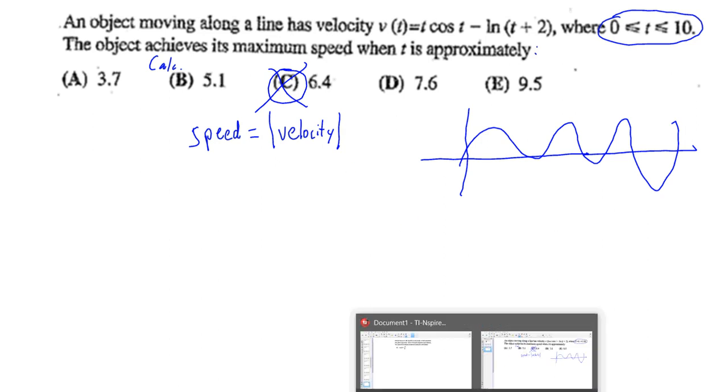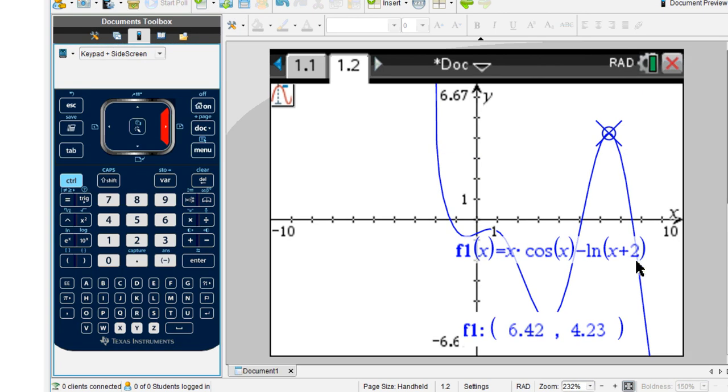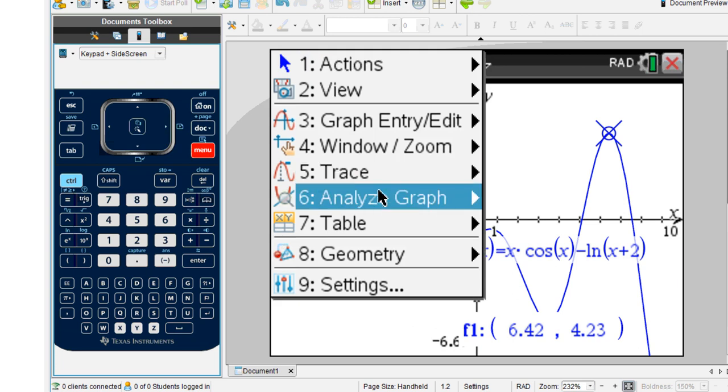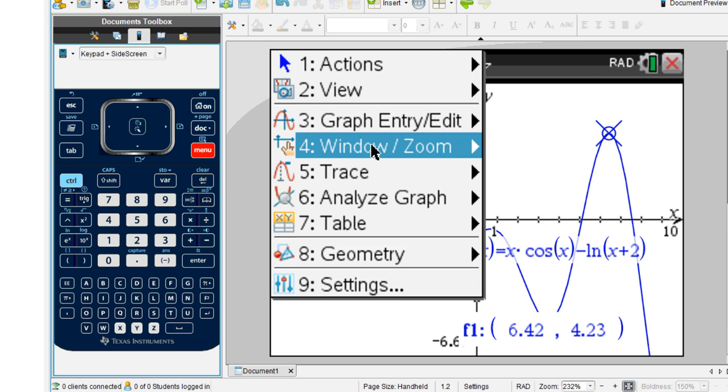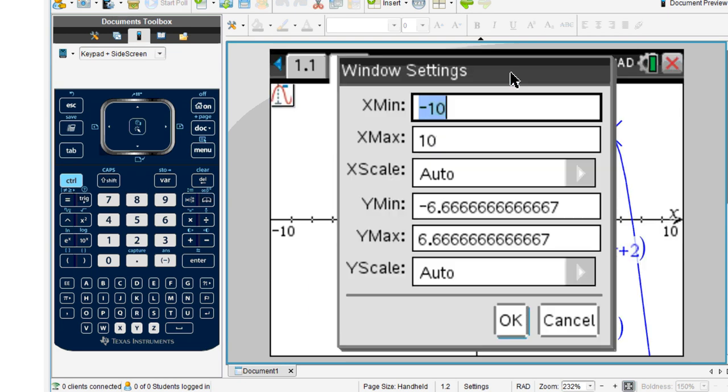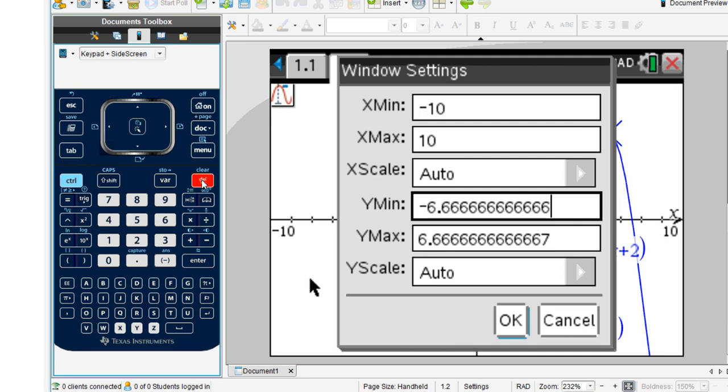That means when we look at this graph, we have a maximum here of 4.23, but look at this thing going down here below, below negative seven. So let's go look at our menu. I'm going to expand the window view. Window settings, I'm going to go to y minimum and just go less than that, I'll say negative 15.